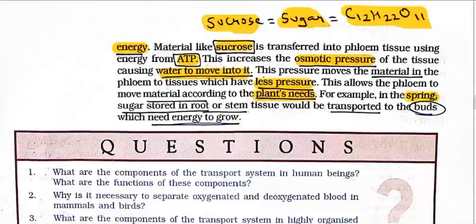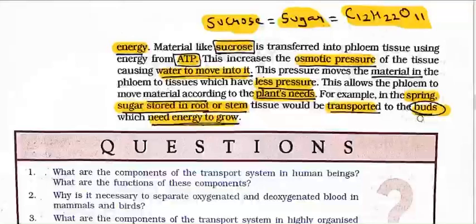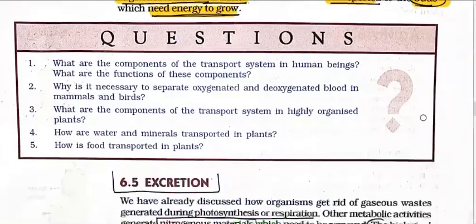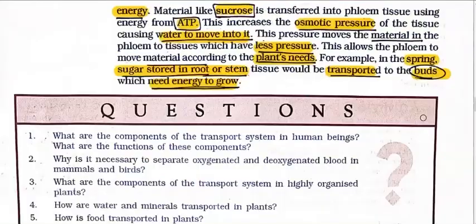For example, in spring and autumn seasons, sugar stored in root or stem tissue is transported to the buds which need energy to grow. Flowers bloom in spring, and the energy needed for that comes from sugar stored in roots and stems, transported to the buds via phloem, after which the flower grows. That was all regarding transportation in plants.